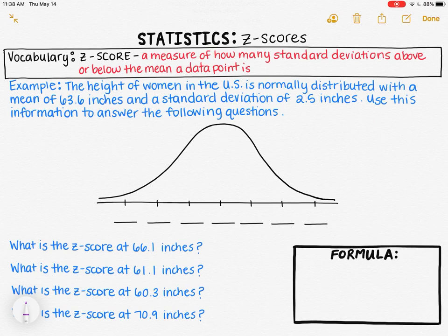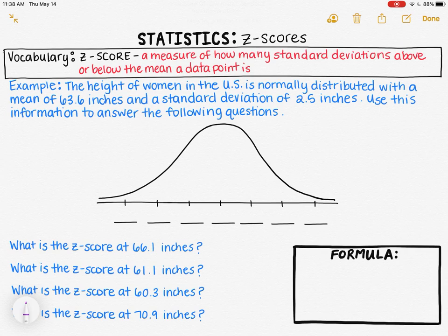In this video, we're going to talk about something new called z-scores. In this example, the height of women in the US is normally distributed with a mean of 63.6 inches and a standard deviation of 2.5 inches. We're going to use this information to answer some questions about z-scores. Before we talk about what z-scores are, let's start by labeling our normal curve with all the information we've been given.